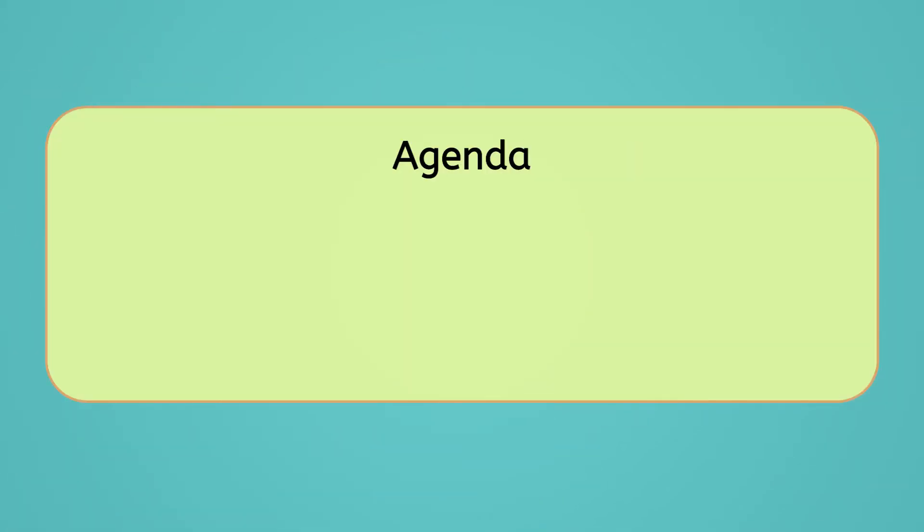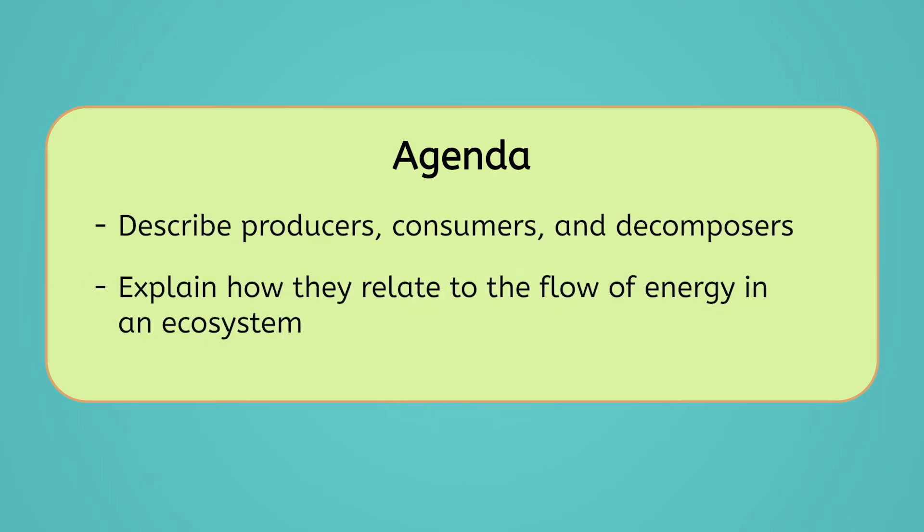By the end of today's lesson, you'll be able to describe producers, consumers, and decomposers, and explain how they relate to the flow of energy in an ecosystem. Let's get into it.